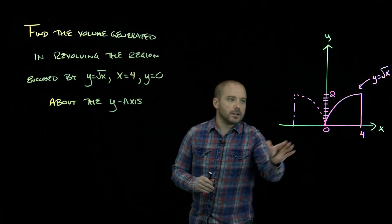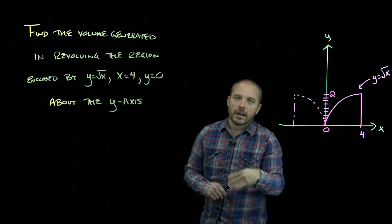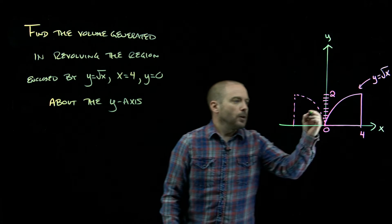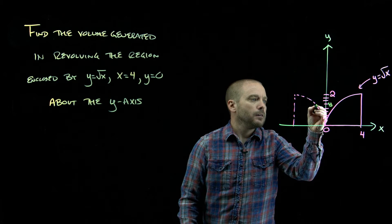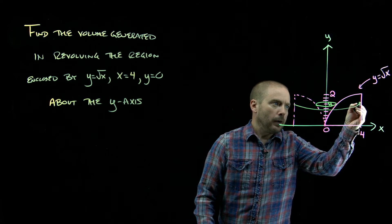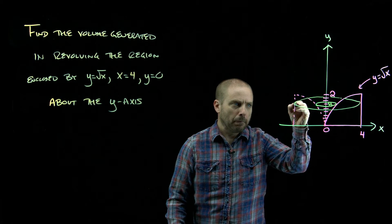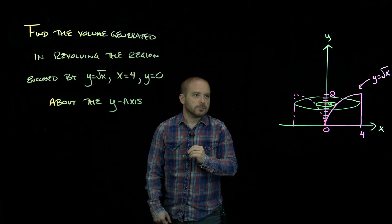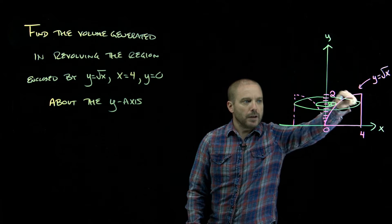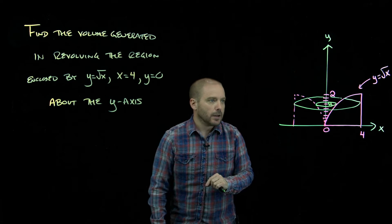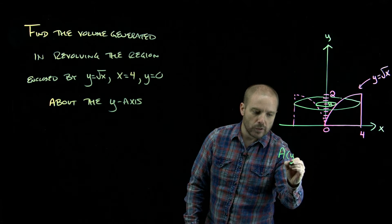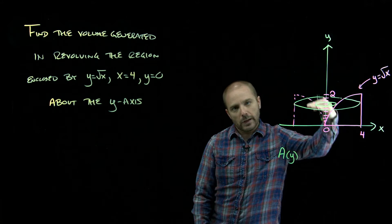All we need to do is express the area of one slice and then integrate those areas. So at a given y, when we slice, we'll have that hole in the middle and the solid will be a bigger circle. The geometry involved here is still just area of circles, but now we'll have a bigger circle's area with a smaller circle's area cut out. So we want to express that cross-sectional area as a function of y, because we're integrating with respect to y.